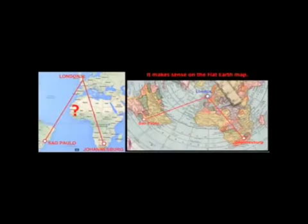Proof 47: On a ball Earth, Johannesburg, South Africa to Sao Paulo, Brazil should be a quick straight shot along the 25th southern latitude, but instead, nearly every flight makes a refueling stop at the 50th degree north latitude in London first. The only reason such a ridiculous stopover works in reality is because the Earth is flat.